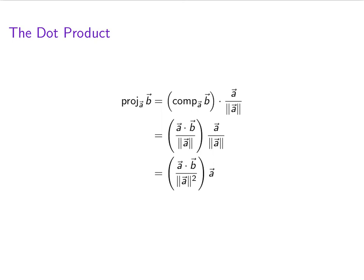Notice that this thing in parentheses is a scalar. And then the simplest possible formulation we can come up with is (A · B) / (A · A) times the vector A.